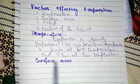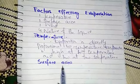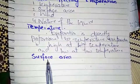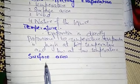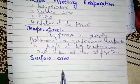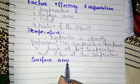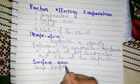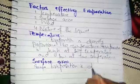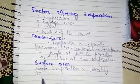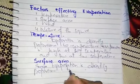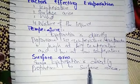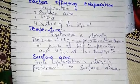Our next factor is surface area. If you want to dry up wet clothes, if you spread them over a large area then the wet clothes will dry up soon. If you have a small area then the clothes will take too much time to dry up. So evaporation is directly proportional to surface area — large surface area means large evaporation, small surface area means small evaporation.